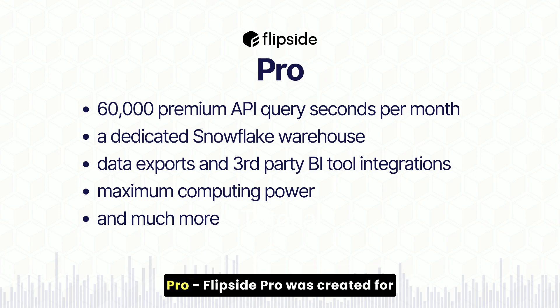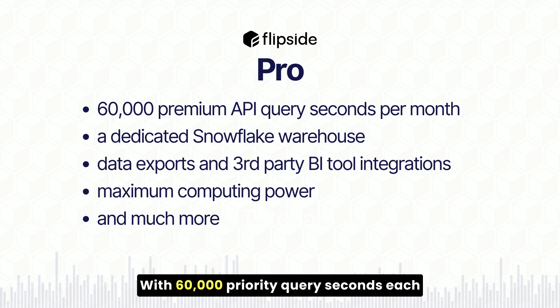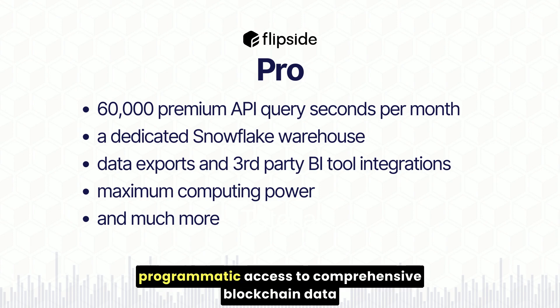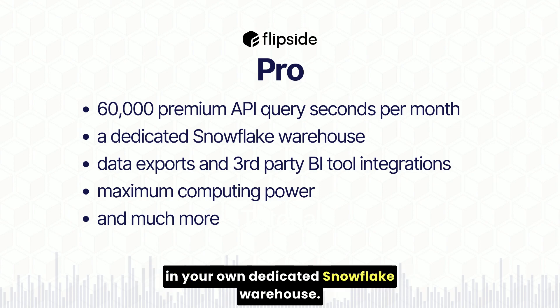Pro. FlipSide Pro was created for businesses that need data at scale. With 60,000 priority query seconds each month, you get reliable speeds and programmatic access to comprehensive blockchain data in your own dedicated Snowflake warehouse.